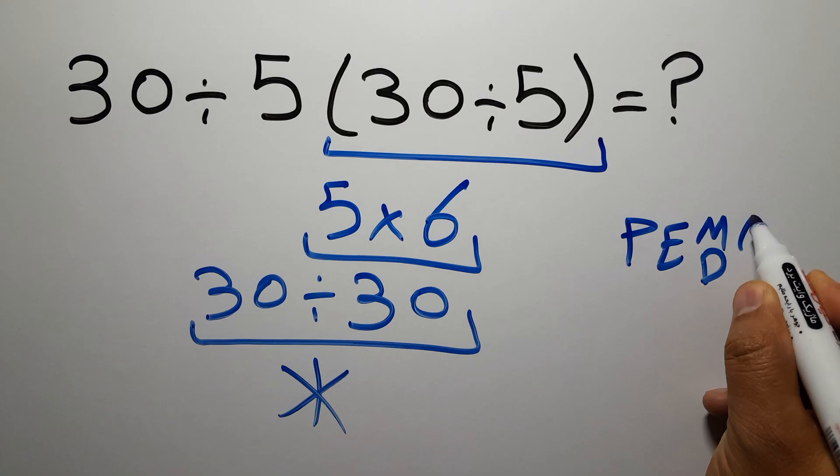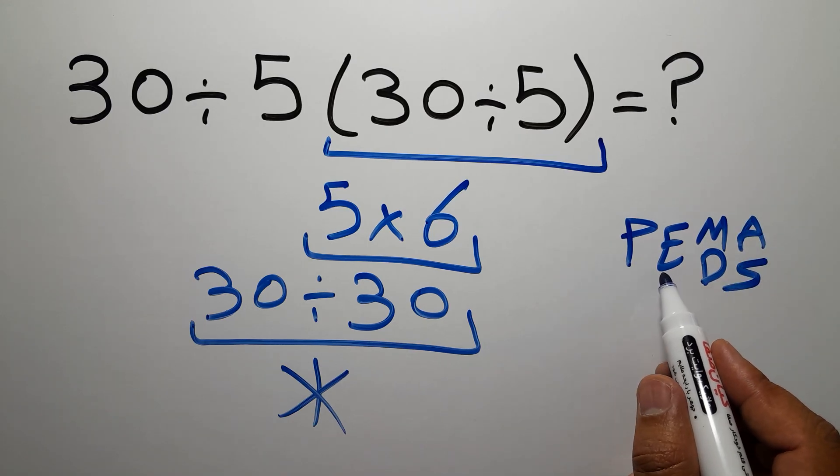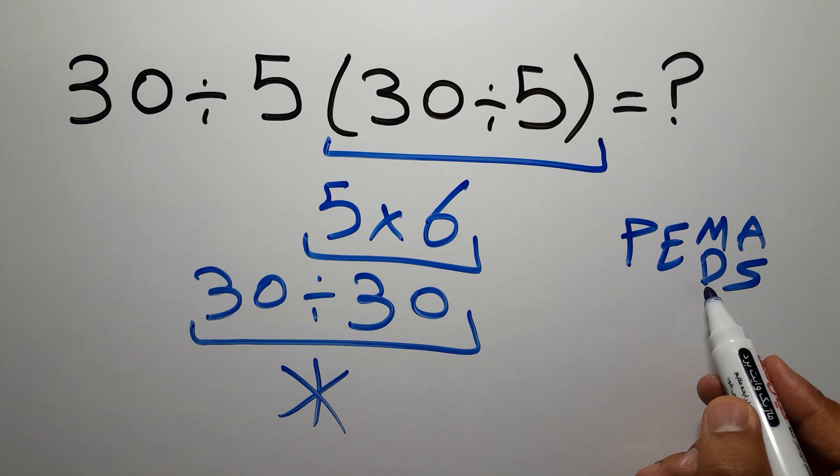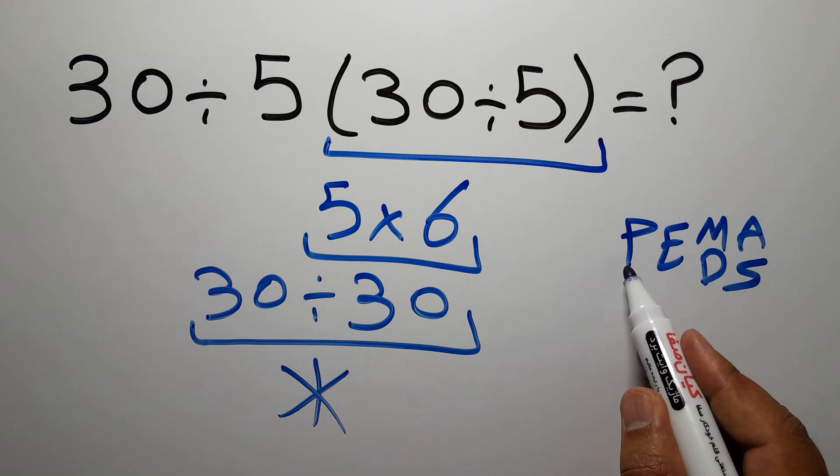P stands for parentheses, E stands for exponents, M and D stands for multiplication and division, and A and S stands for addition and subtraction.